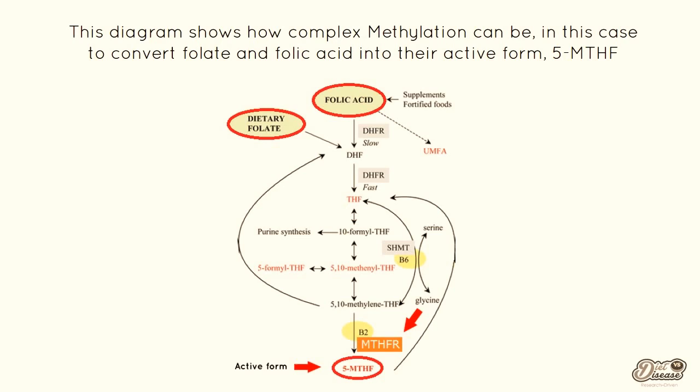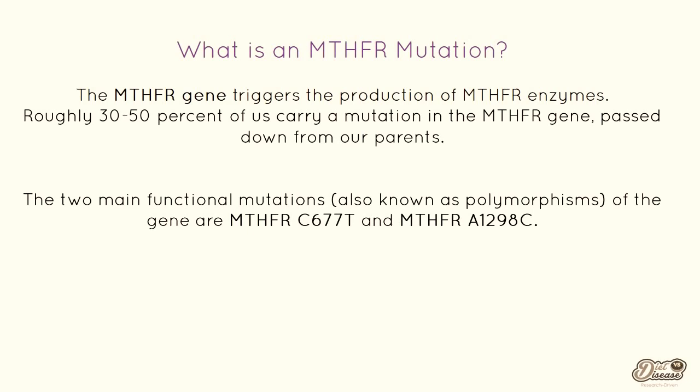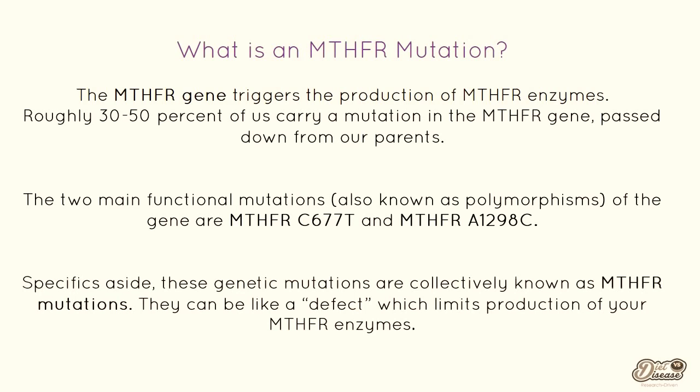Without it, you will not get the conversion of folic acid or folate into the active form — and that's where the MTHFR mutation comes in. The MTHFR gene triggers the production of MTHFR enzymes. Roughly 30–50% of us carry a mutation in that gene, which is passed down from our parents. The two main functional mutations, also known as polymorphisms, are MTHFR C677T and A1298C. These genetic mutations are collectively known as MTHFR mutations, and they can limit production of your MTHFR enzymes, causing a problem in the methylation process of vitamin B9.